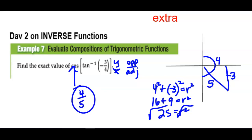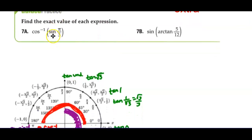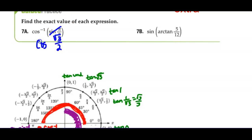We didn't need a unit circle for that example. Now this one is asking us to use two different functions. Pi over 3 — if I go to pi over 3 right here, the sine is square root of 3 over 2. Remember, these are compositions of functions, so we do them inside out. So then it's saying, where is the cosine of square root of 3 over 2? The x value or cosine value is square root of 3 over 2 at pi over 6.